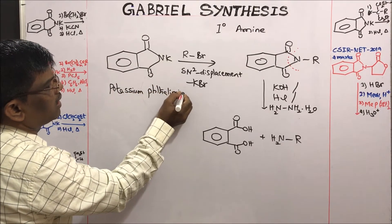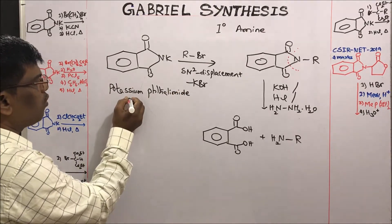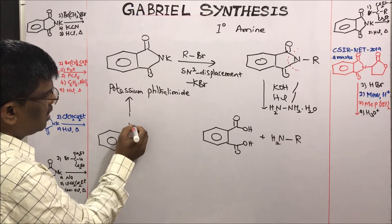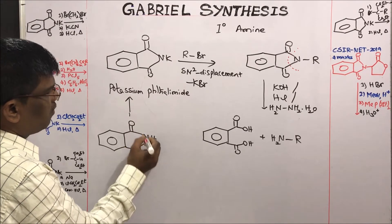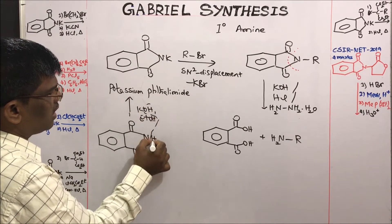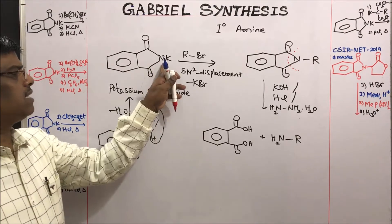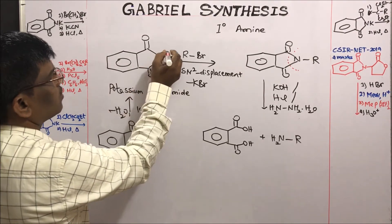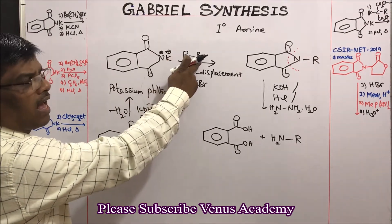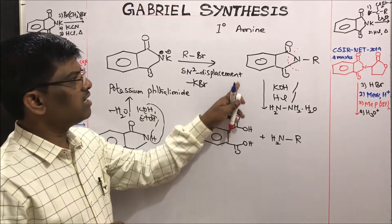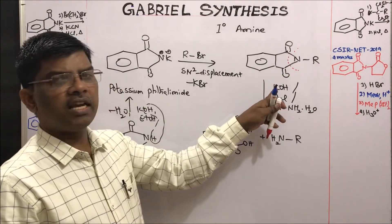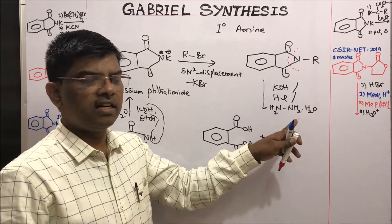How to prepare potassium phthalimide? It is very simple — just take phthalimide. When you treat it with KOH in alcoholic solution, for example ethanol, it loses water. Minus water, we are going to get potassium phthalimide — K⁺ and the phthalimide anion. This potassium phthalimide, upon reacting with alkyl halides under SN2 displacement reaction conditions, gives this N-alkylated phthalimide.